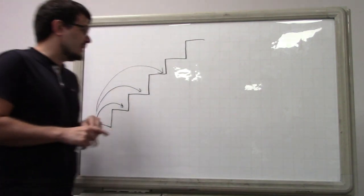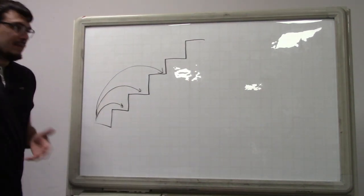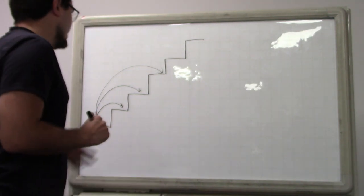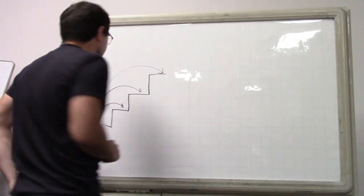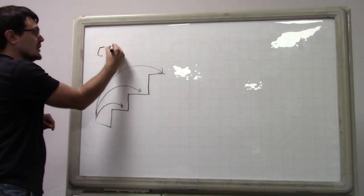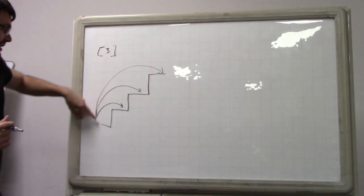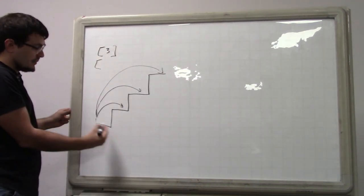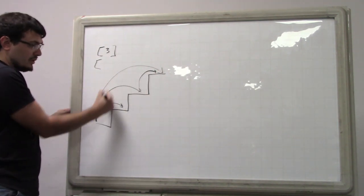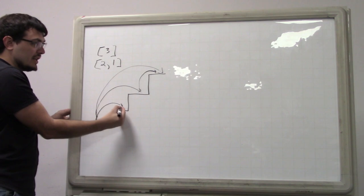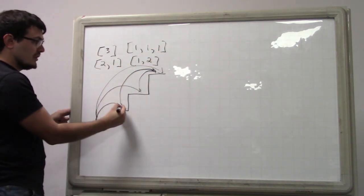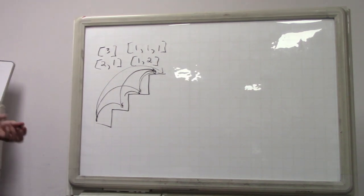What counts as a different way is any sequence that's different. For example, if you only have three steps to climb, there are four different ways: you can take a single step of three, or go two and then one, or one and then two, or just take three single steps — one, one, one.